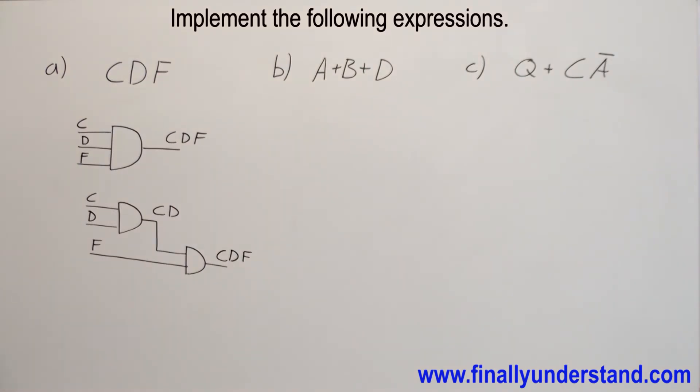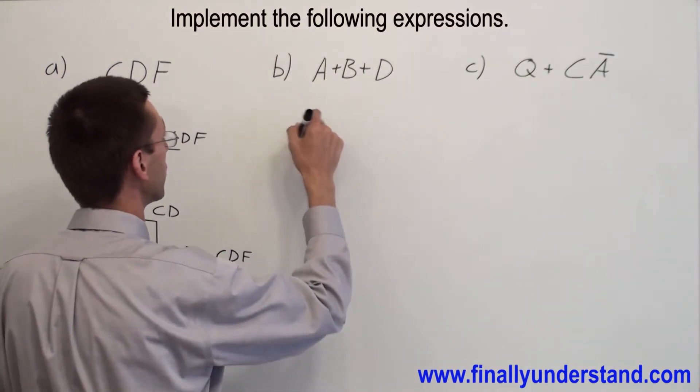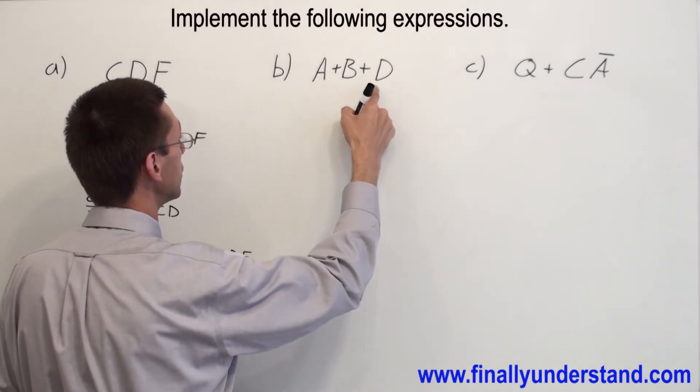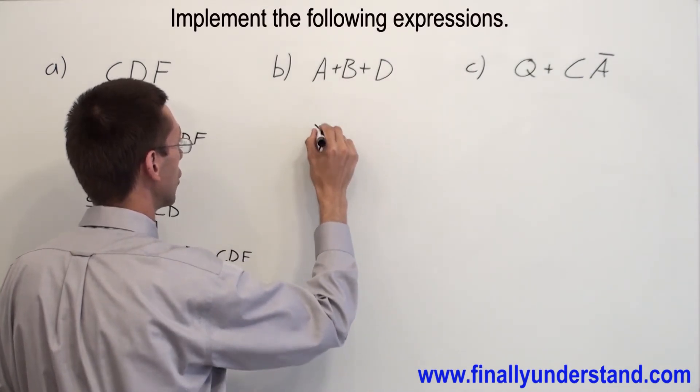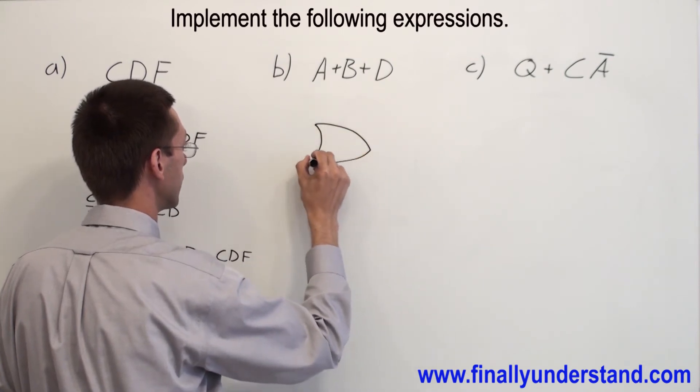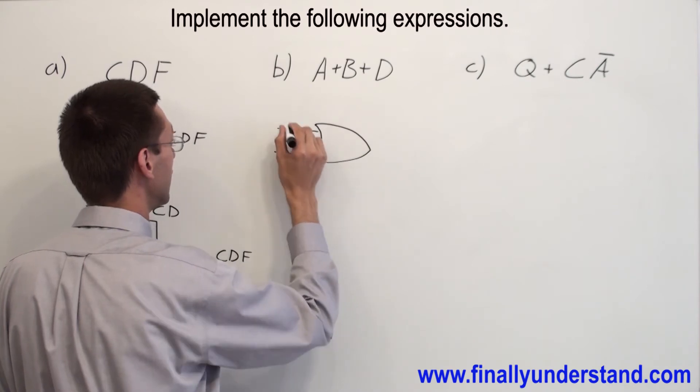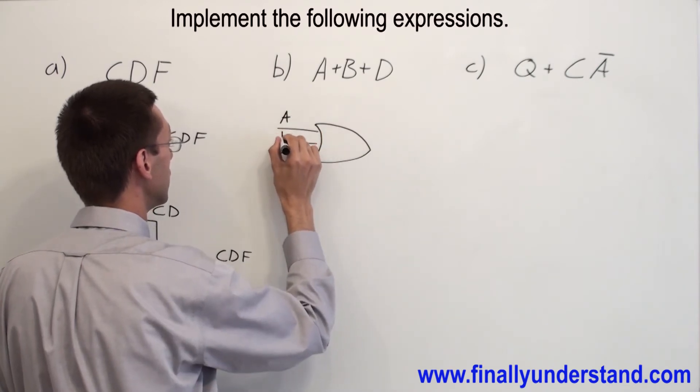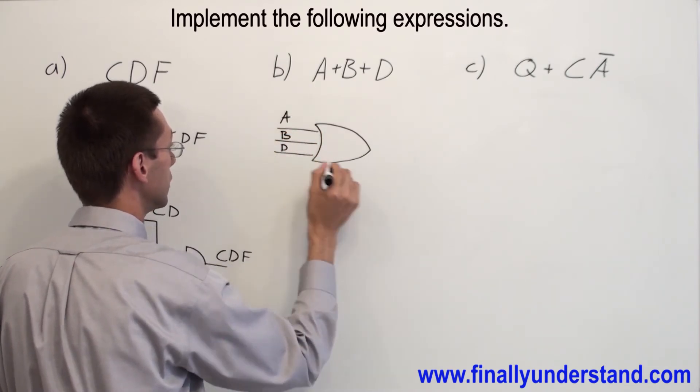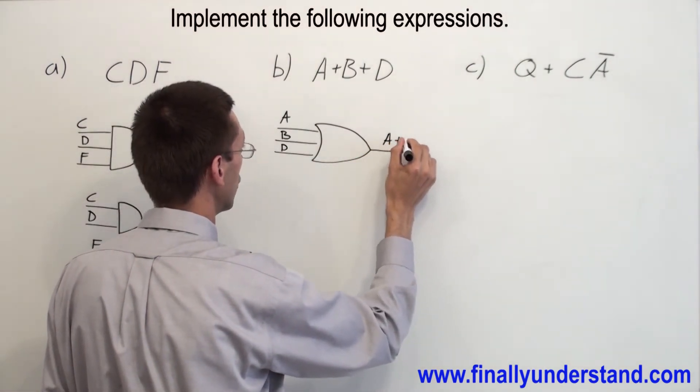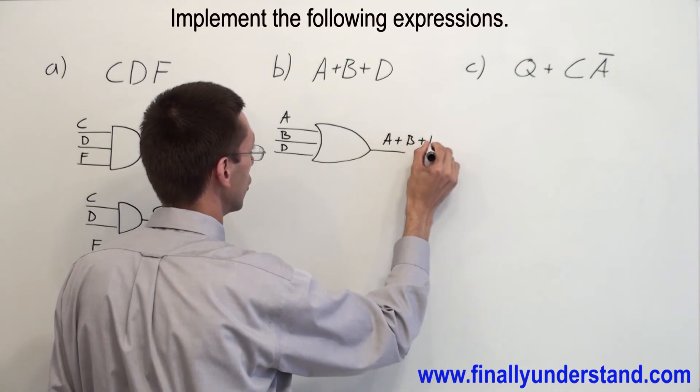Now let's take a look at example b. Again, this is nothing else, just a three input OR gate. I have A, B, D. This is my output: A or B or D.